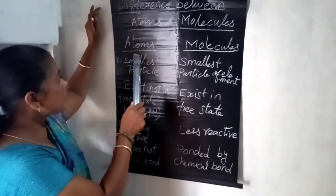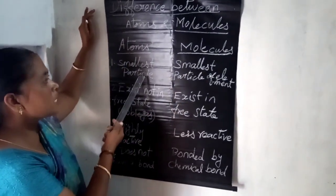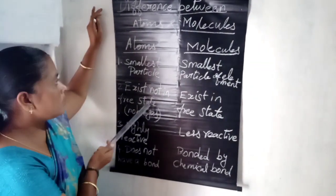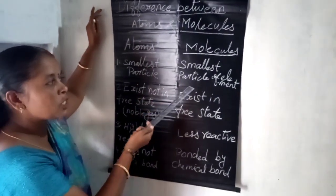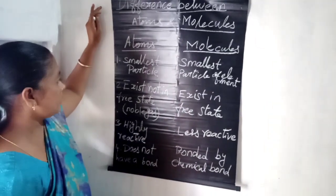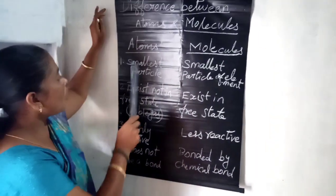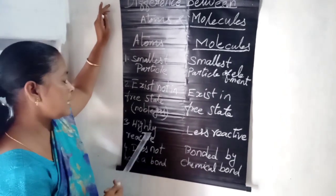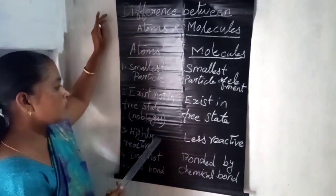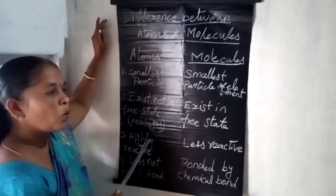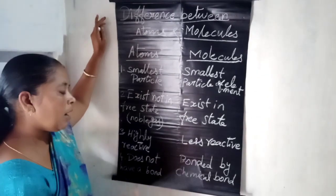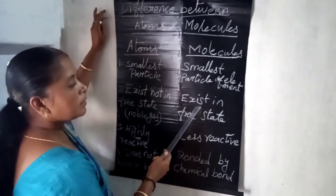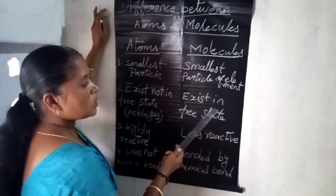First, atoms and molecules: an atom is the smallest particle of a substance, while a molecule is the smallest particle of an element or compound. Atoms do not exist in a free state because all atoms are monoatomic, diatomic, or triatomic — as we already saw when studying atomicity.